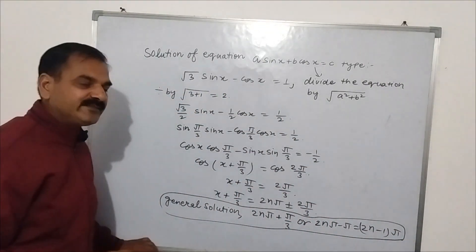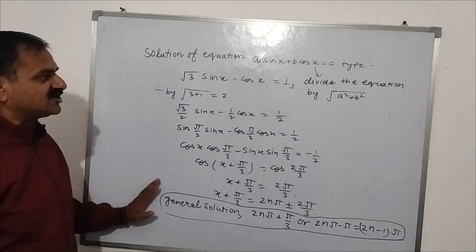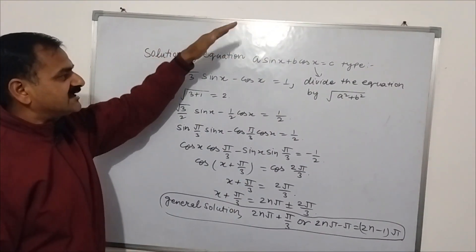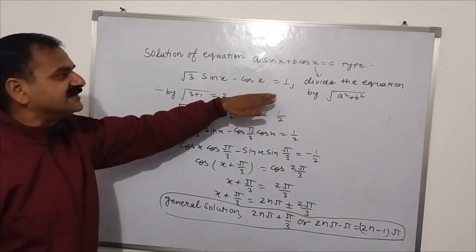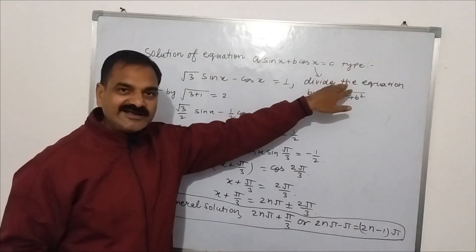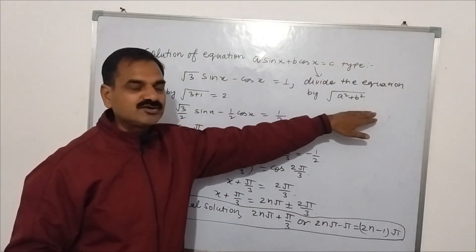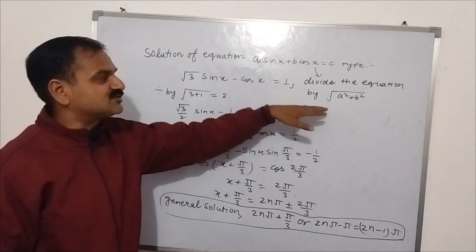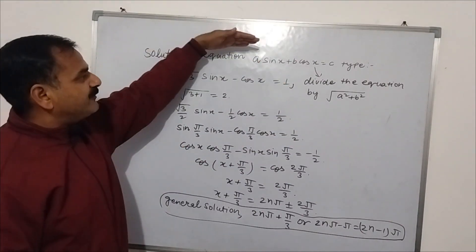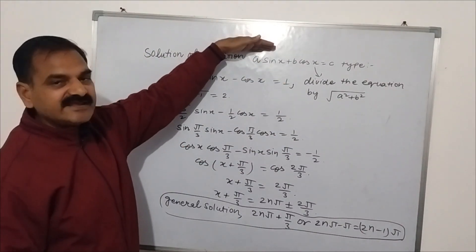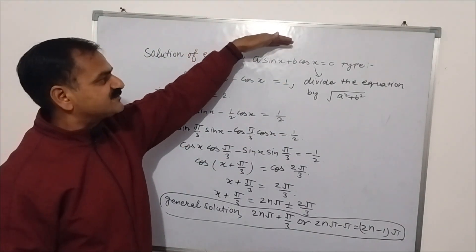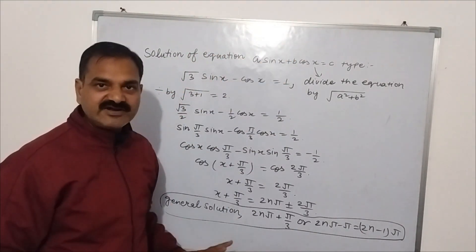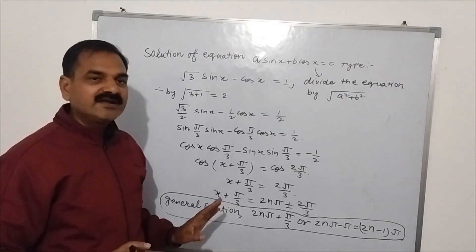This is the same solution we got from the squaring method. So this is our second method, where we divide the equation by under root (a² + b²), and compare with the equation of type A sin x + B cos x = C.